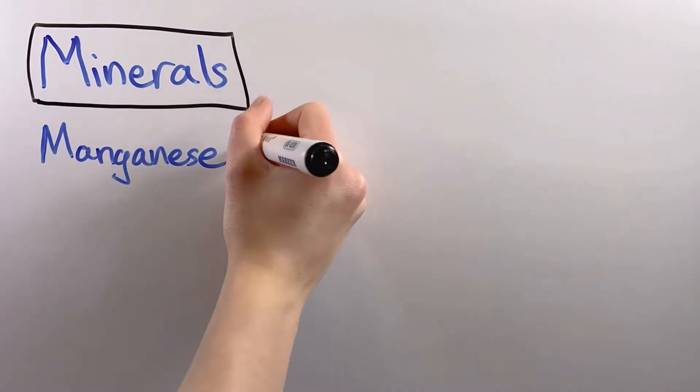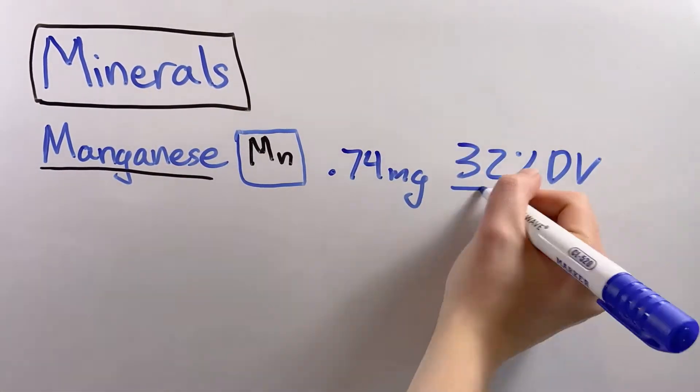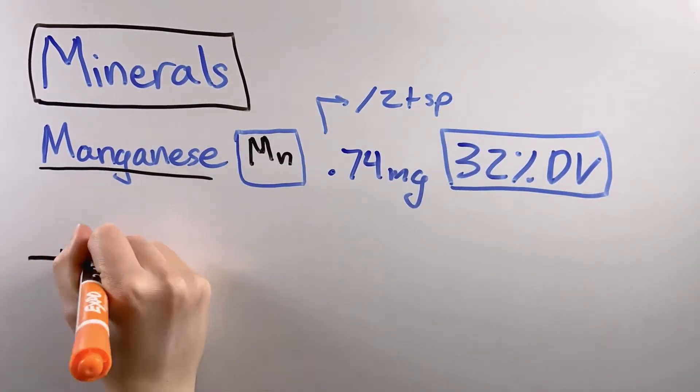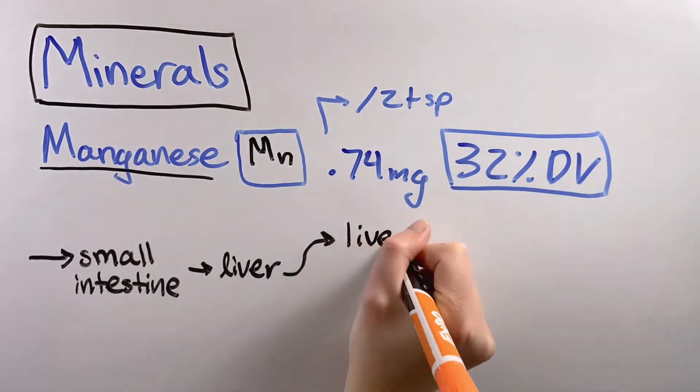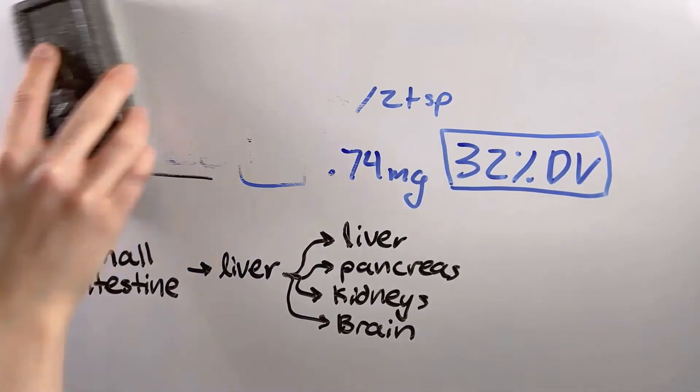Black pepper is surprisingly high in manganese, with 2 teaspoons providing 32% your daily value. It's required for the metabolism, bone formation, reproduction, the immune system, and blood clotting.